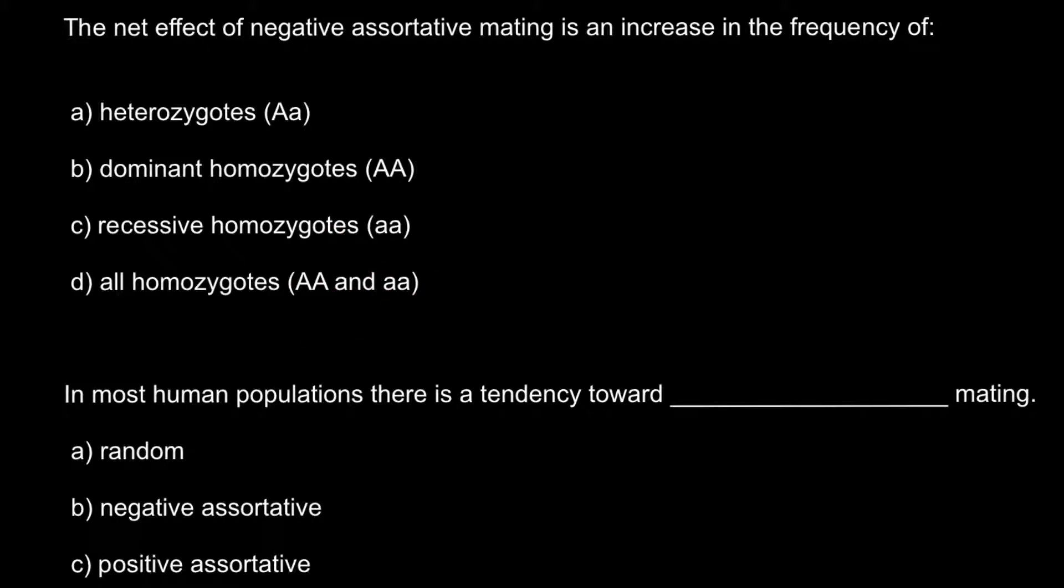So in order to answer what is negative assortative mating, I would like to tell you the difference. Positive assortative mating would be when someone is mating or dating someone from his own group.